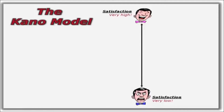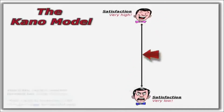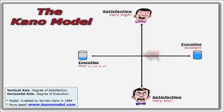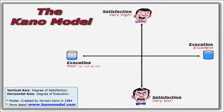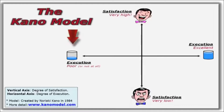The model starts with a set of axes where three types of requirements will be plotted. The vertical axis is a satisfaction level, from very satisfied on the top to very dissatisfied on the bottom, and neutral in the middle. The horizontal axis objectively describes how well each need has been executed or fulfilled. All the way to the right, the need has been very well executed. All the way to the left, executed very poorly or not at all.